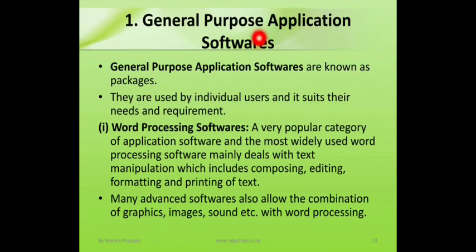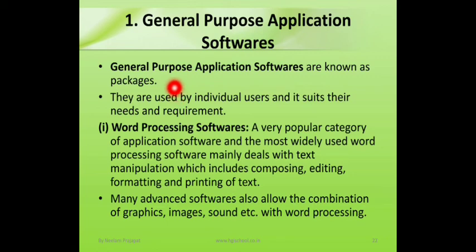Now we will discuss about the types of application software. The first type is general purpose application software. These softwares are known as packages — for example, Microsoft Office. In Microsoft Office, MS Word is there for documents, MS Excel for spreadsheets, MS PowerPoint for presentations, Microsoft Picture Manager to edit images, and Microsoft Publisher to create brochures and magazines. All these come in a package, which is why it is called general purpose application software.